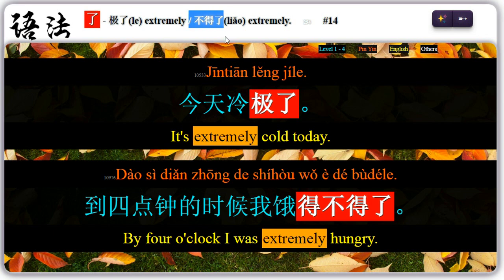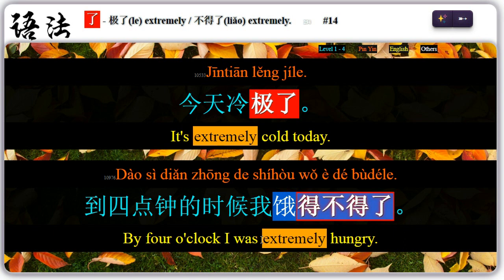Fourteen: 不得了 means extremely. For example, 今天冷极了 — 冷极了, it's extremely cold today. 到四点钟的时候,我饿得不得了 — 饿得不得了, extremely hungry.